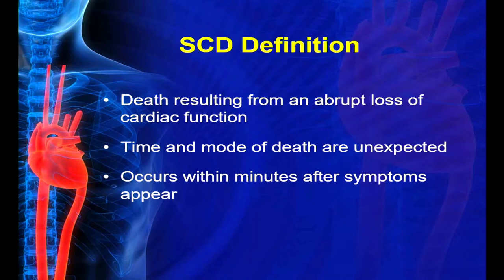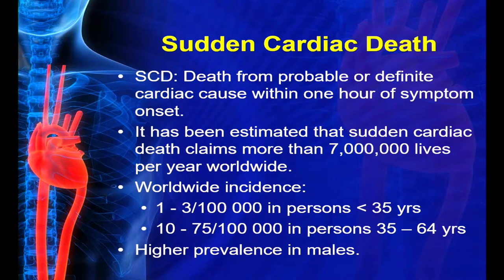Sudden cardiac death is death resulting from an abrupt loss of cardiac function. The time and mode of death are unexpected, and it usually occurs within minutes of symptoms appearing. It's also defined as death from probable or definite cardiac cause within one hour of symptom onset. That one-hour window is important — for the death to be classified as sudden cardiac death, it must occur within one hour of symptom onset.